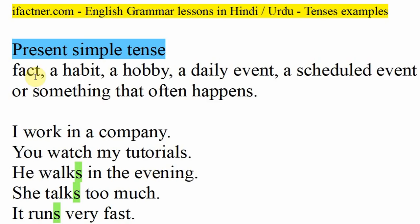Present simple tense - jissa ka iske naam se hi zahir hootahe, yeh simple tense hai. Jissa koi bhi fact ho, ki zameen goal hai, toh uswad hain present simple tense use kareenge. Ya phir koi habit ho - mein raat ko jaldi sota hoon, mein subha jaldi uhtta hoon. Toh yeh mein present simple tense mein baat ker raha hoon, aur isi chiz ko hum English mein bhi isi tarah use kertae hain.